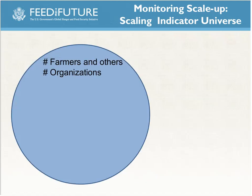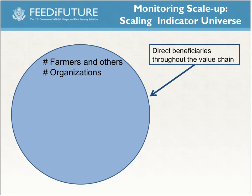Looking at the beneficiary universe: the two indicators — farmers and others, and number of organizations applying improved technology — cover direct beneficiaries anywhere throughout the value chain. This is not just about farmers; it includes individual processors, herders, fisher folk, and others. So this is the broad grouping of direct beneficiaries you might be working with.